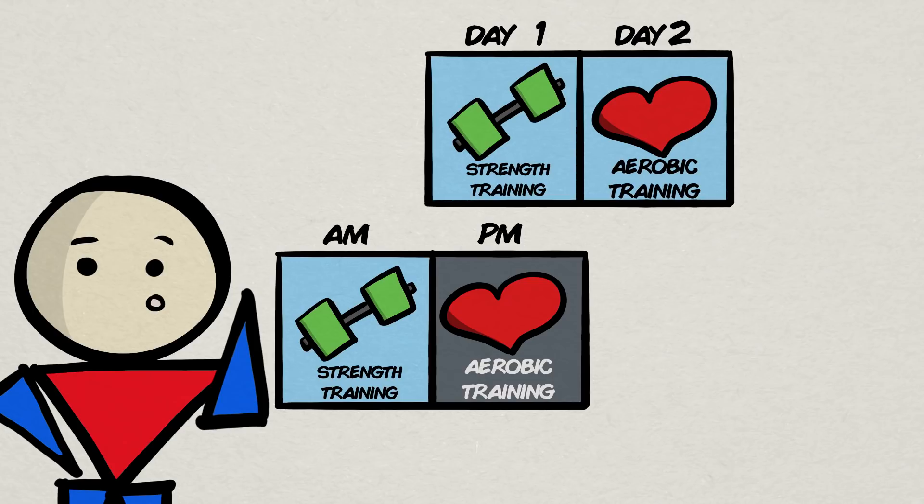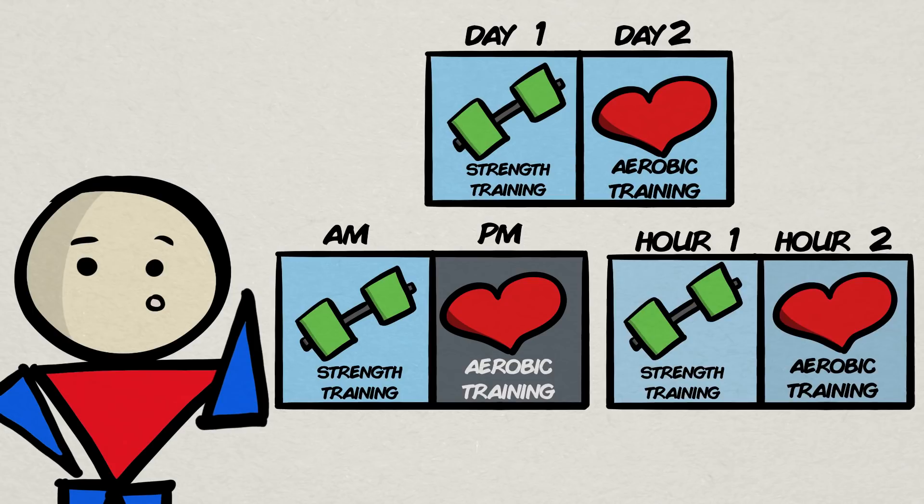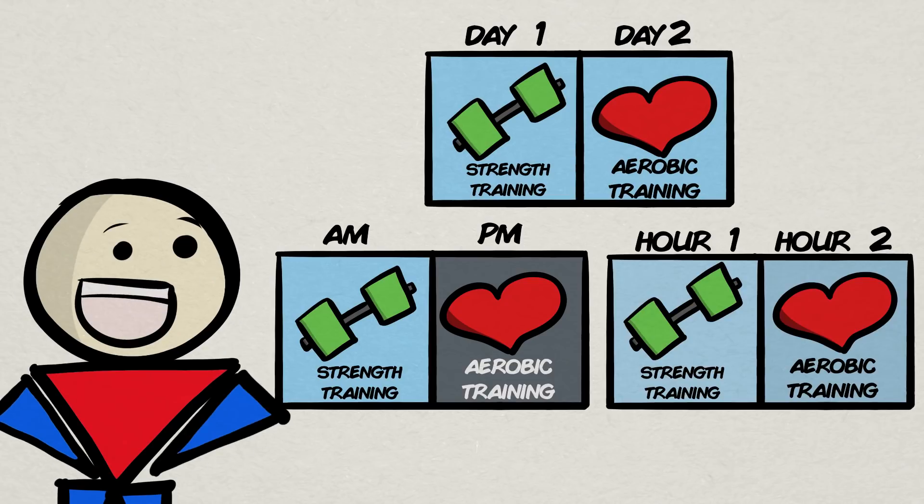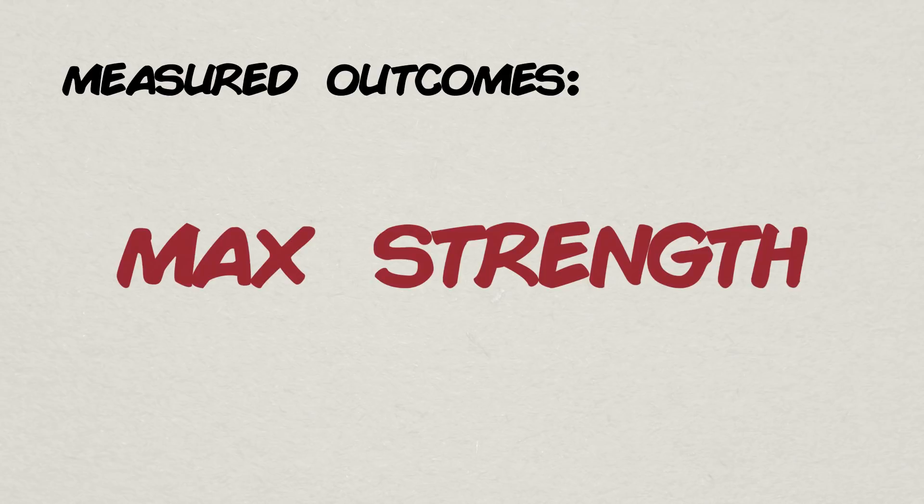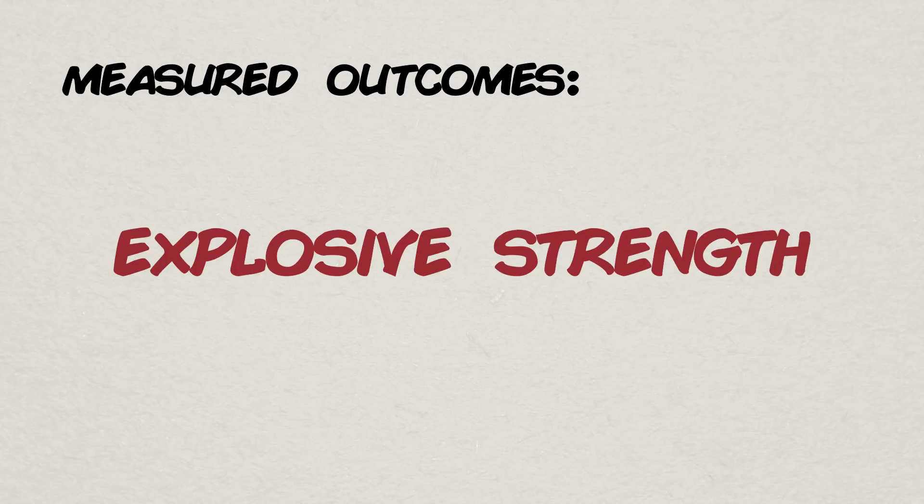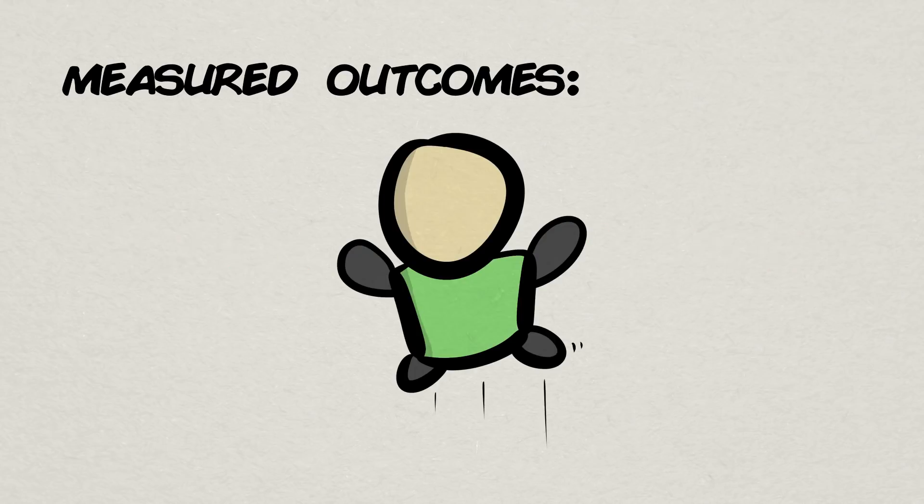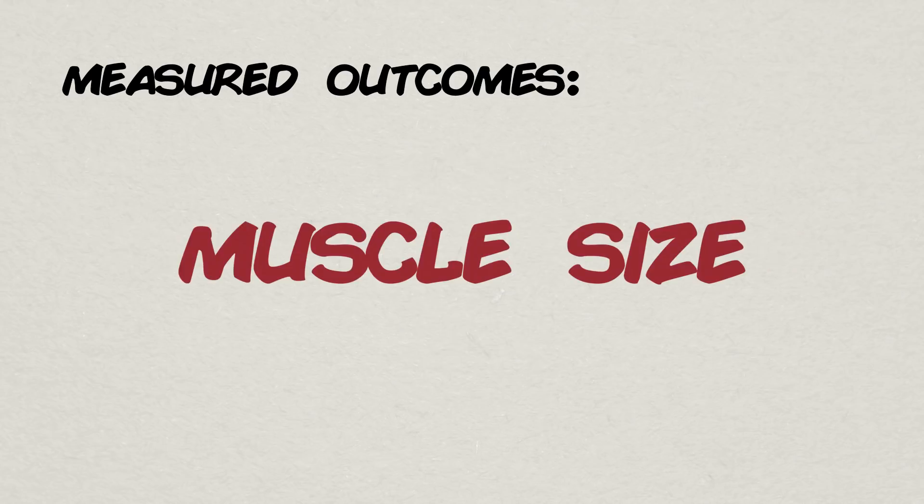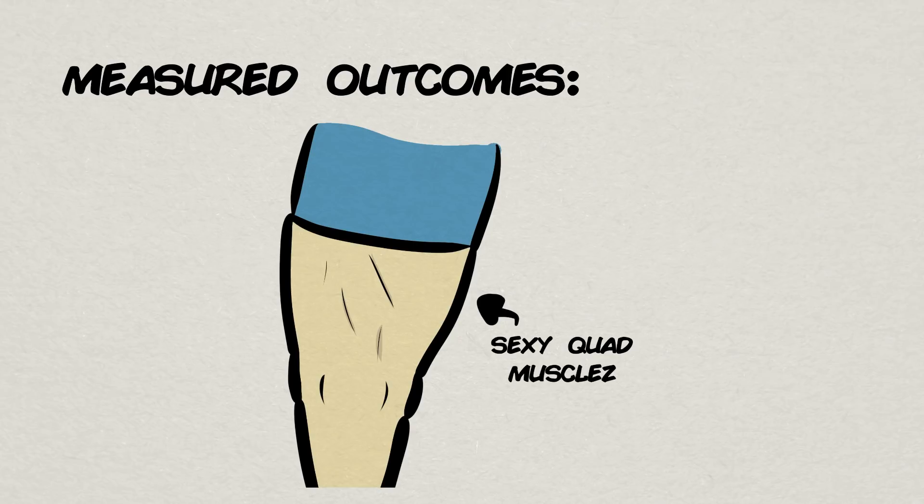Different timings were considered too, whether aerobic and strength exercises were performed on separate days, separate sessions in the same day, or in the same session. A little extra perspective. As far as measured outcomes, the data looked into three main ones: maximal strength, assessed through things like 1RM squats and leg presses; explosive strength, measured through things like jump height and squat jump power; and muscle growth, measuring size differences in quad muscles.